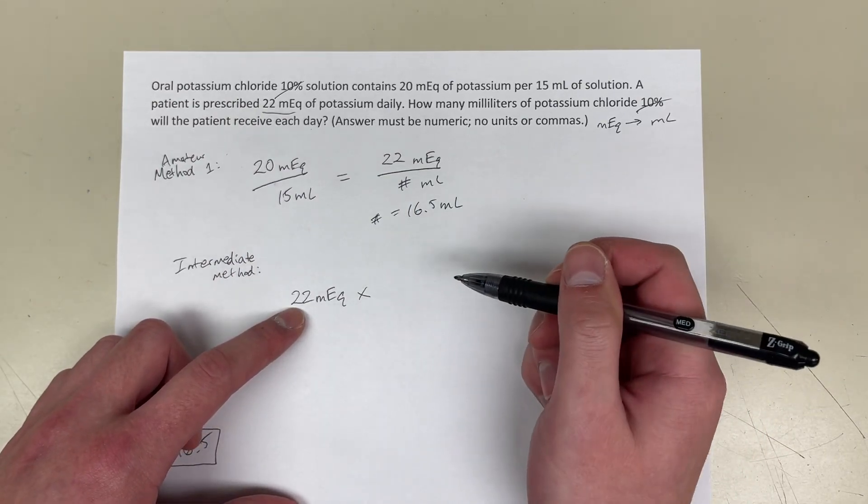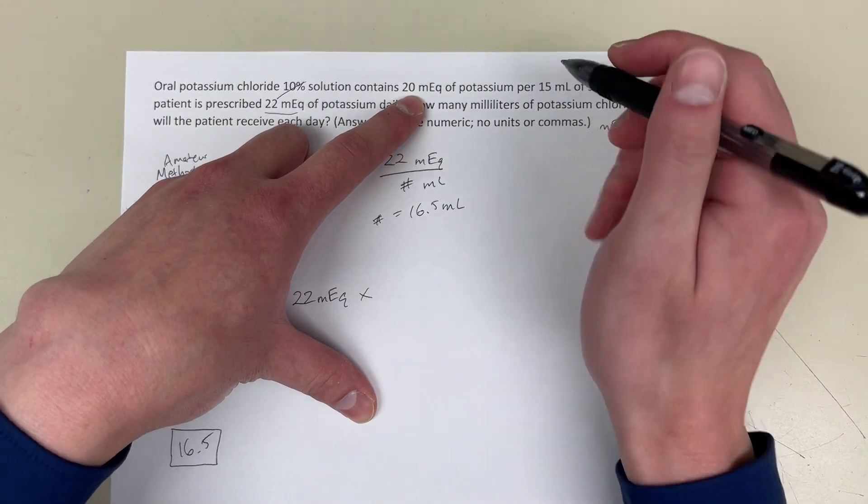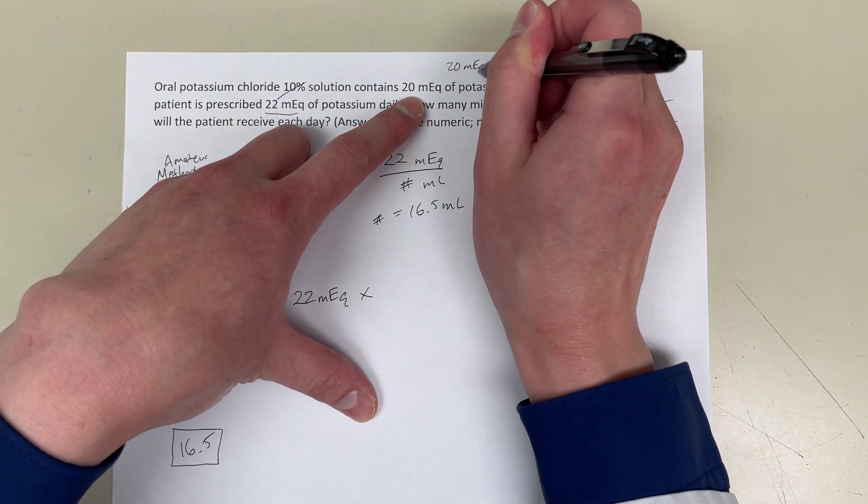So, I'm going to multiply that by concentration, which is here: 20 milliequivalents per 15 milliliters. That's the concentration that we have.